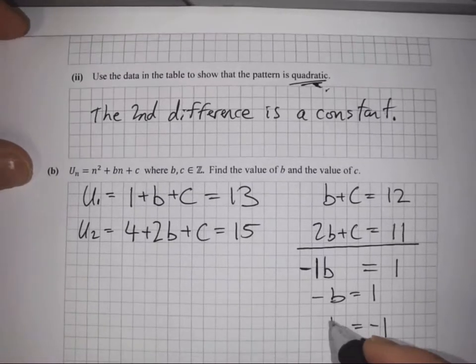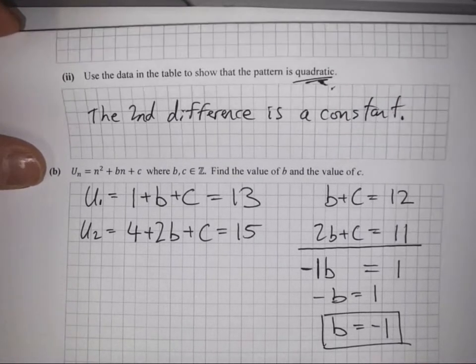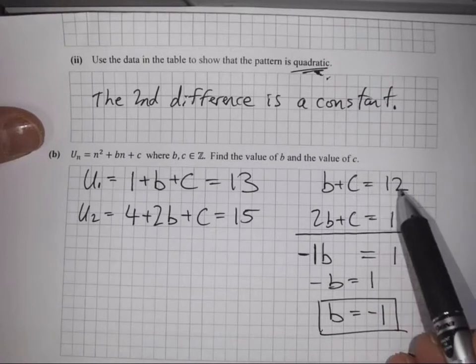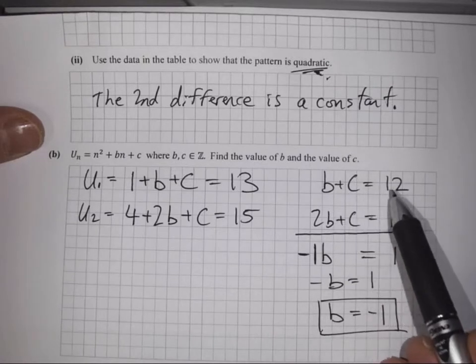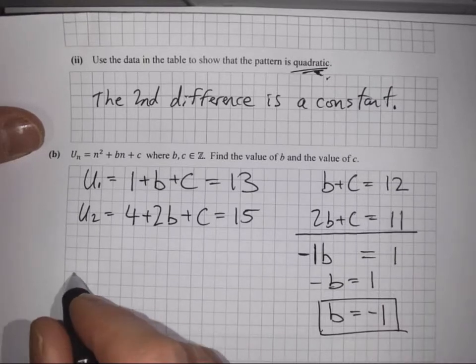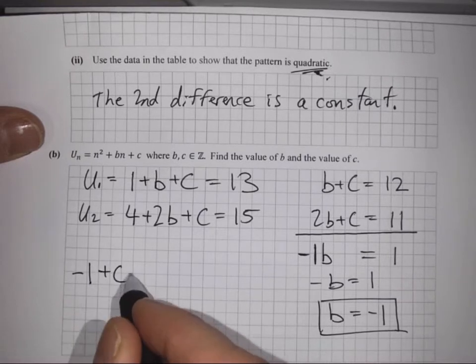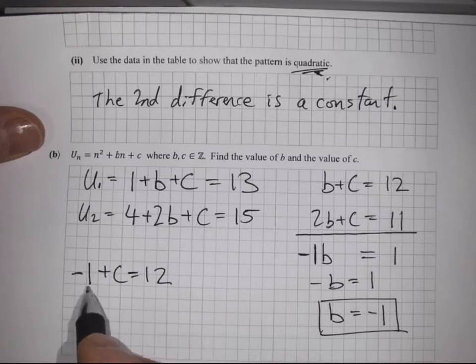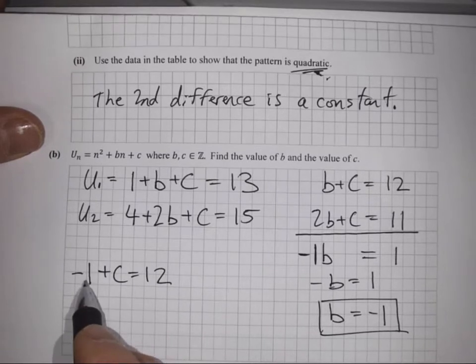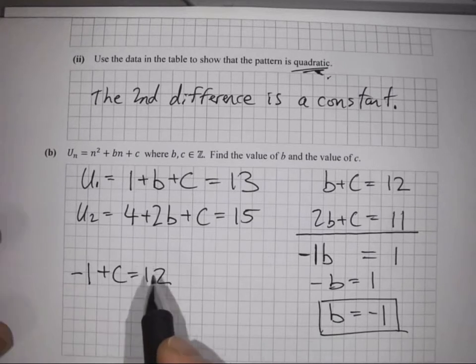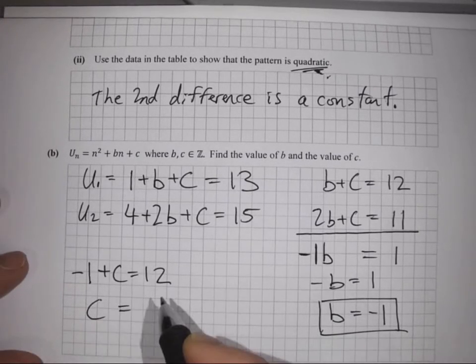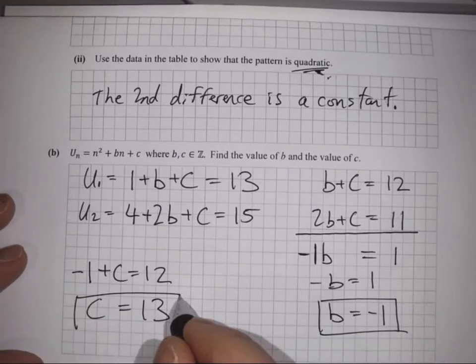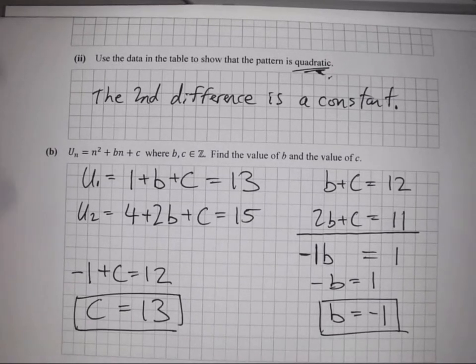Now we're looking for c. We can use one of the original equations: b plus c equals 12, so -1 plus c equals 12. Adding 1 to both sides gives us c equals 13. Now we have b and c sorted.